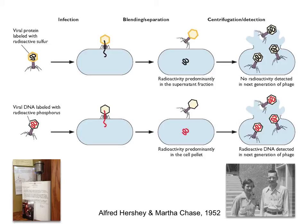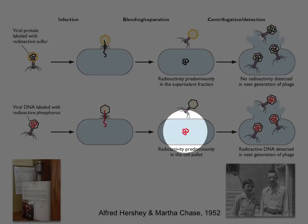So they would grow phages with radioactive precursors to protein, or radioactive precursors to the DNA. When they labeled the DNA, they would infect E. coli very briefly and then use a blender to shear off the infecting phage — that was what the blender was for. They only let the phage attach very briefly, enough to put the genetic information in the cell. And the radioactivity was predominantly found in the cell after a brief infection when you labeled the DNA.